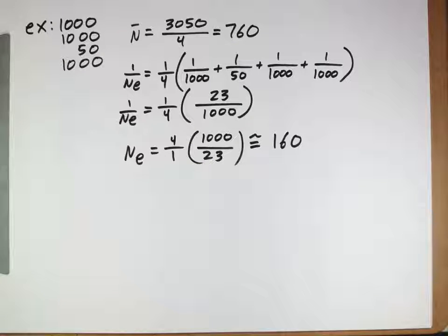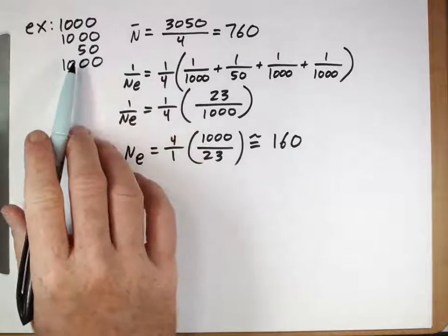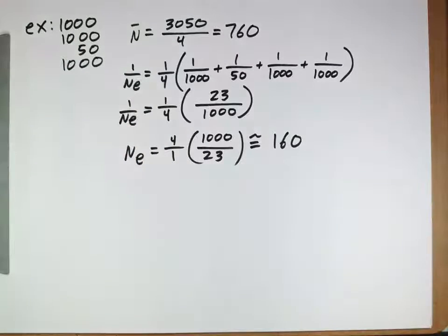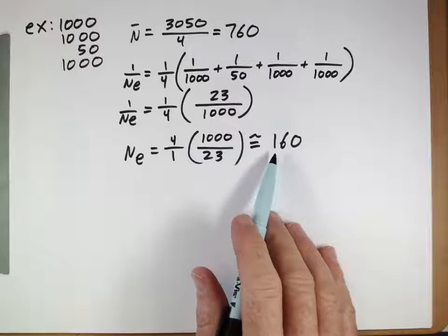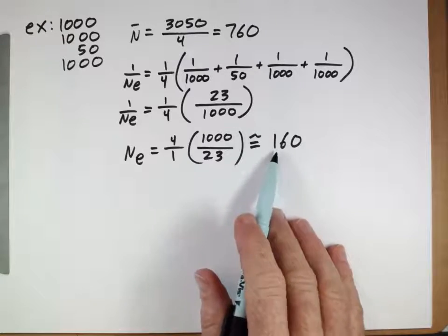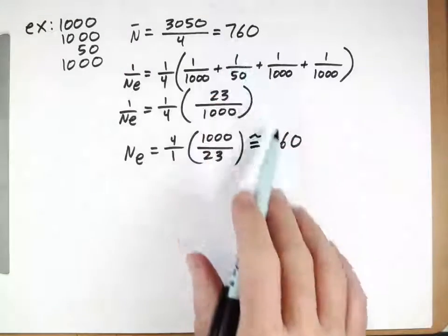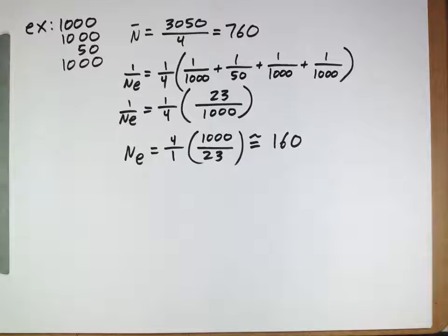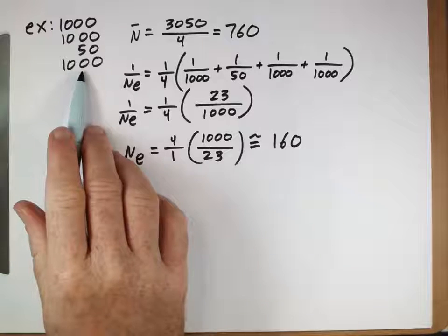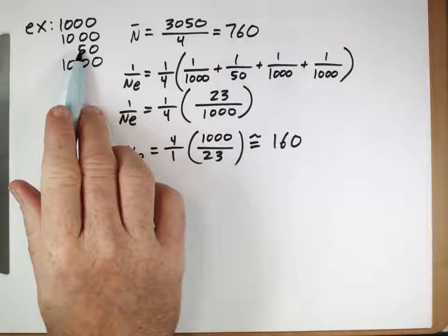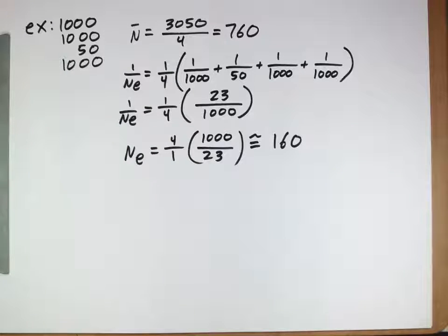This illustrates how important even temporary population crashes are. This population was healthy — it immediately rebounded back to 1000 — but the consequences of that one low-population generation are much larger than expected. This is one reason why we're concerned with endangered species: even if we can get their populations back up, a population crash makes them act like a much smaller population, even in the long term.